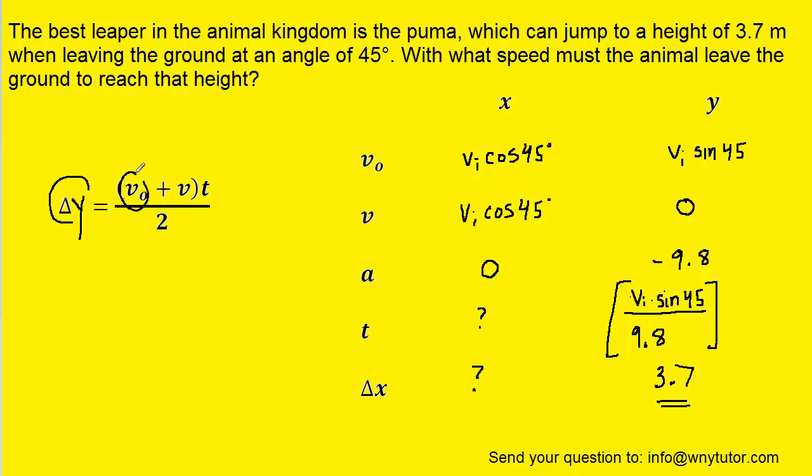We have the initial velocity in terms of vi sine 45. The final velocity was zero. We just came up with an expression for time as well, so we can plug all of that into this equation.